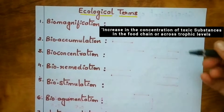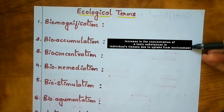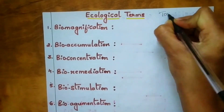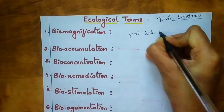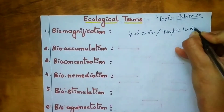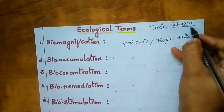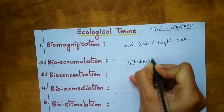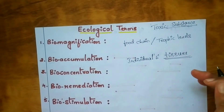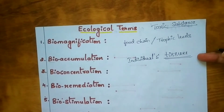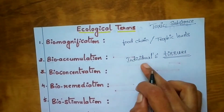Let us move on to the next term: bioaccumulation. Bioaccumulation means increasing the concentration of a toxic substance in individual tissues due to uptake from the environment. You can also define it as chemical storage of substances at higher levels in an organism. The key difference: biomagnification is accumulation across the food chain or trophic levels, whereas bioaccumulation is within the individual tissues.